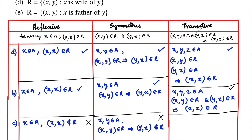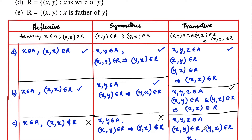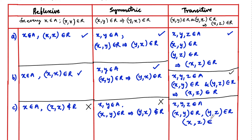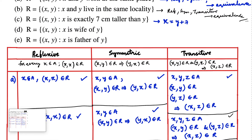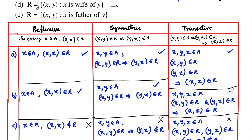For transitive: let x, y, z be three persons belonging to A. Say x is 7 centimeters taller than y, and y is 7 centimeters taller than z. Then x is 14 centimeters taller than z, which does not satisfy the relation. So (x, z) does not belong to r, and hence this relation is not transitive. Therefore the third relation is neither reflexive, nor symmetric, nor transitive.